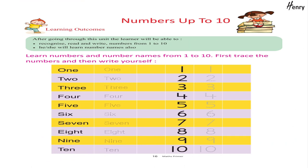Numbers up to ten. Learning outcomes: after going through this unit, the learner will be able to recognize, read, and write numbers from one to ten. He/she will learn number names and also learn numbers and number names from one to ten. First trace the numbers and then write yourself: one, two, three, four, five, six, seven.